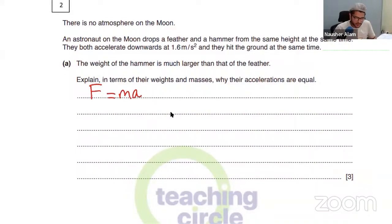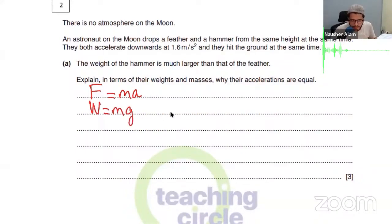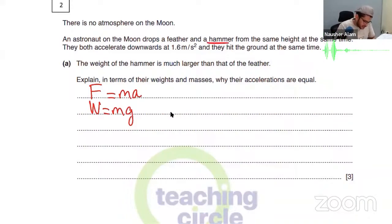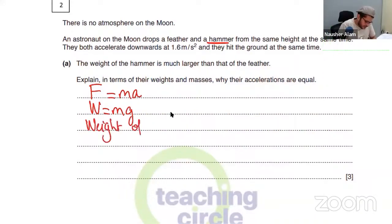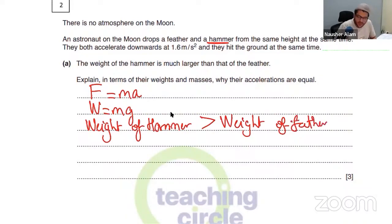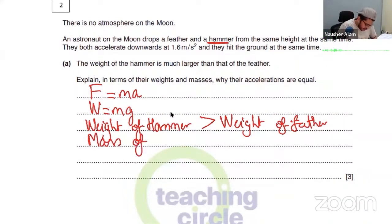For a hammer — would the weight be more or less? The weight of the hammer will be more than the weight of the feather. And can I also say this is because the mass of the hammer is more than the mass of the feather? Yes — so the hammer has greater weight because it has greater mass.